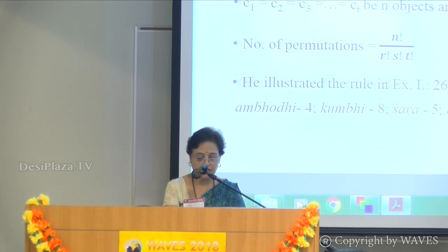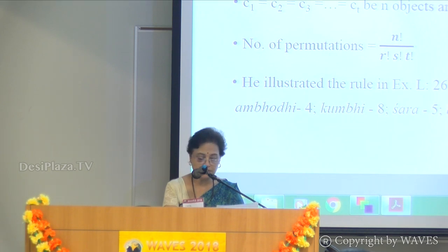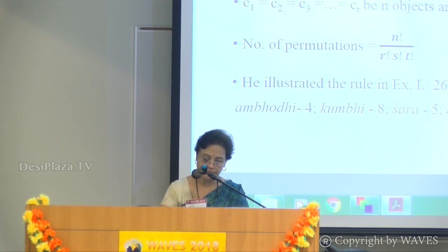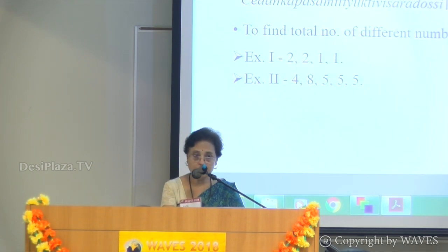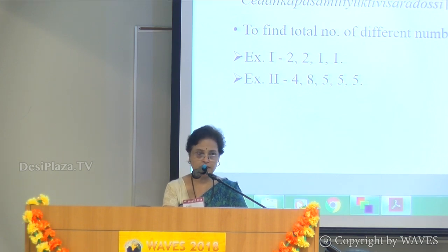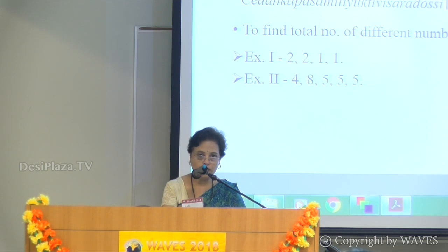He illustrated this rule with two examples using the Bhuta-sankhya system, by which Sanskrit mathematicians converted numbers into words. This system provides synonyms for ordinary numbers. Digit 5 is represented by the words Shara and Bhuta; Ambodhi is 4; Kumbhi is 8; and Bhu means 1, as Earth is one. In the first example he uses digits 2, 2, 1 and 1; in the second example, digits 4, 8, 5, 5 and 5.